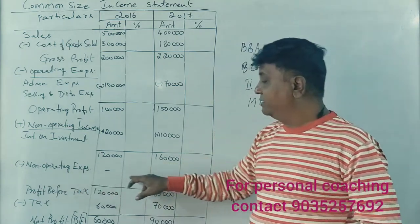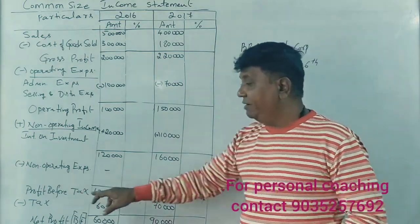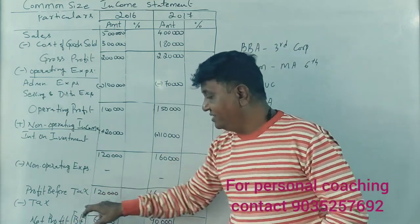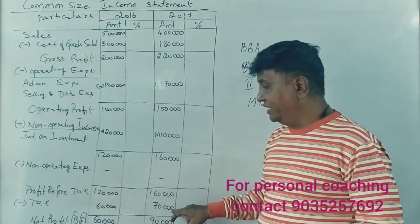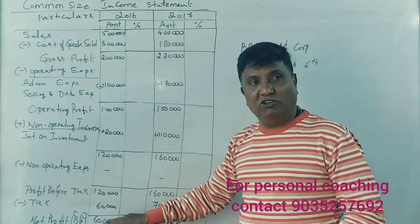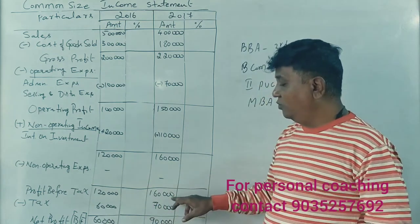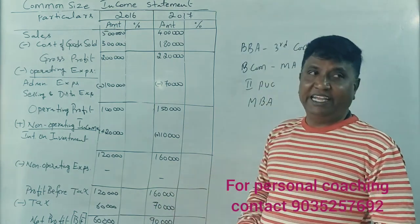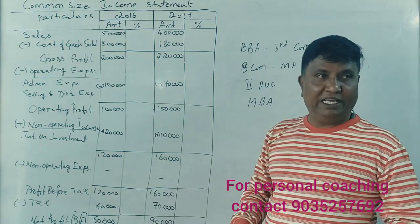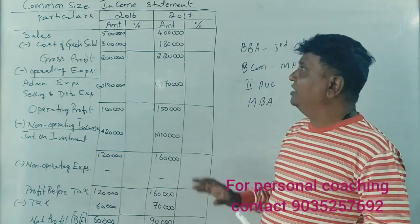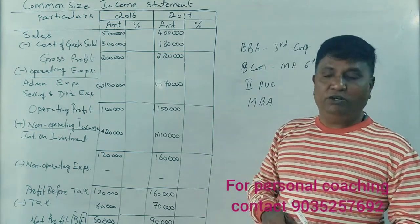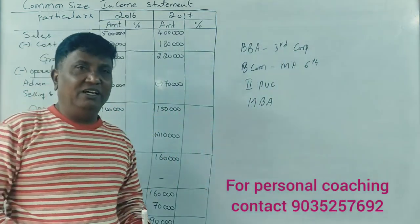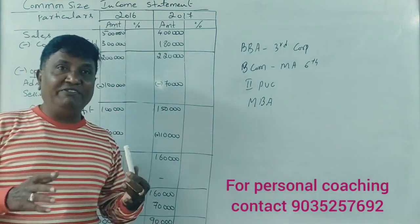Next, for non-operating expenses and profit before tax: minus 1 lakh 20 thousand gives 60 thousand, and 1 lakh 60 thousand minus 1 lakh 70 thousand gives 90 thousand. Now let's move on to the percentage calculations for the Common Size Income Statement, which we already covered in the previous video.